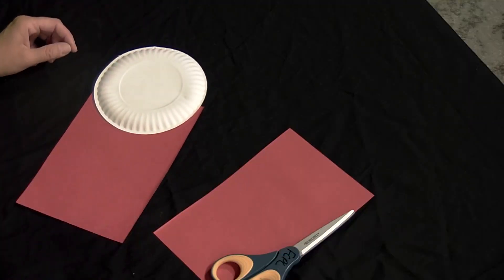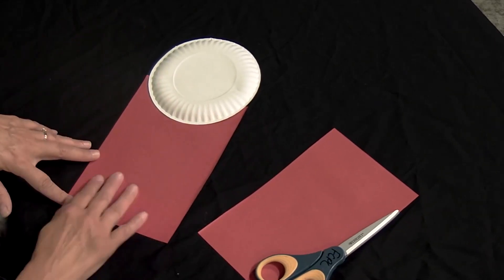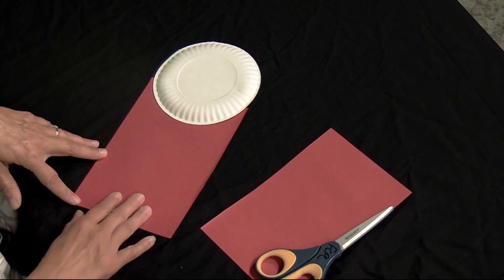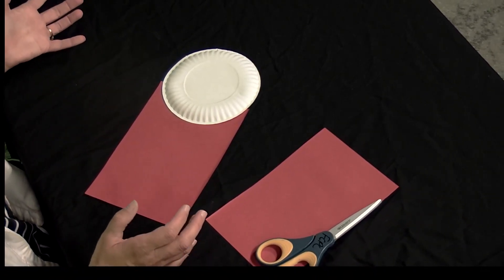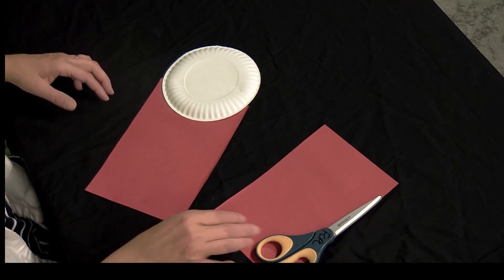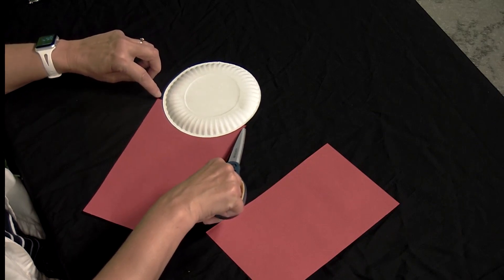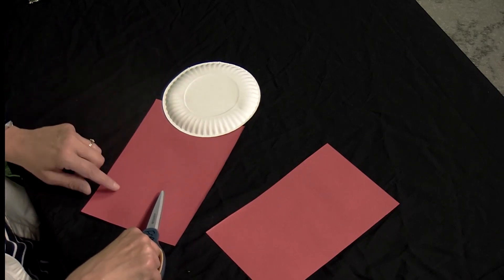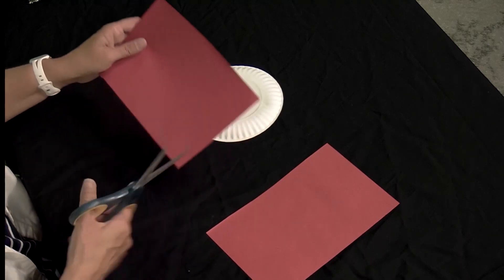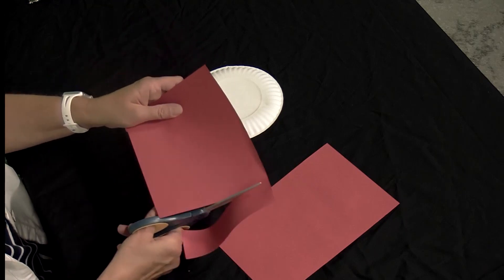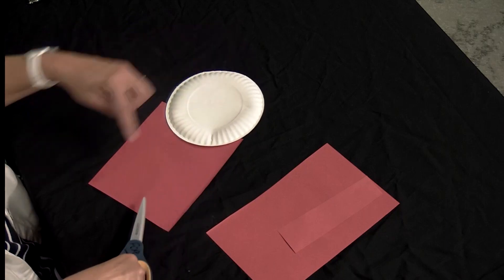Then we're going to take our paper plate and turn it over and eyeball where the paper plate is on the red paper here, because we want to make a base that looks right and something that's not too long, not too short. I'm going to come up here at these corners and cut up just a little bit because I think that's too long. We're going to put that paper plate back on there and that looks about right.